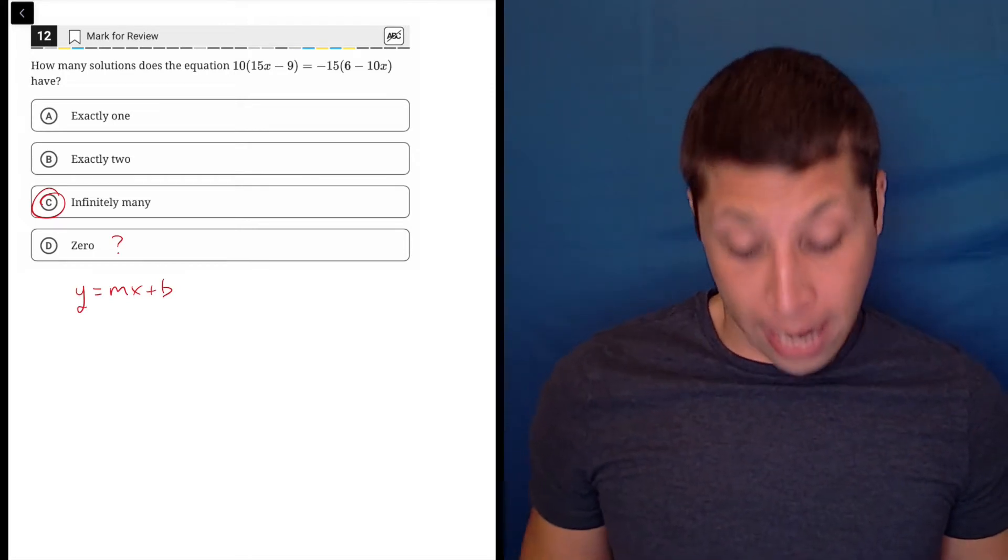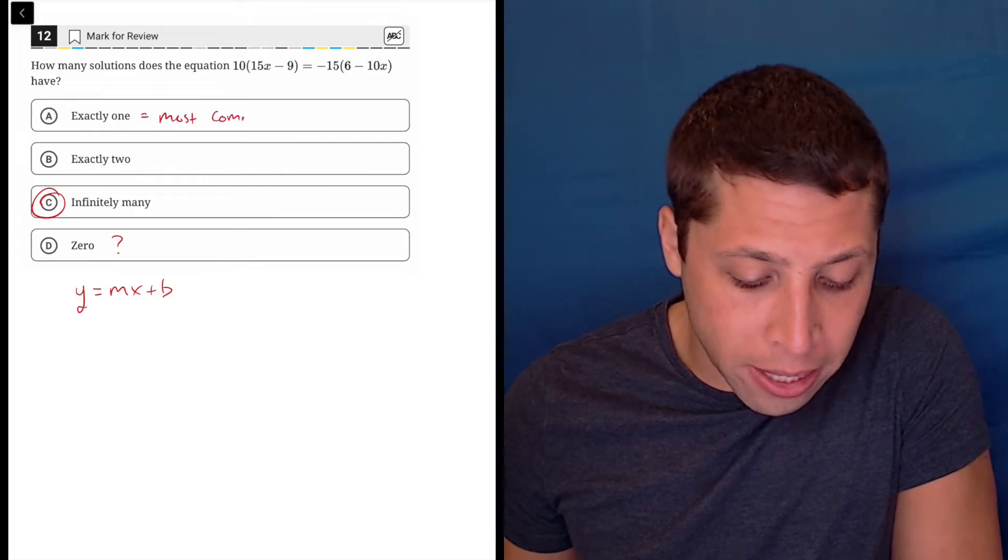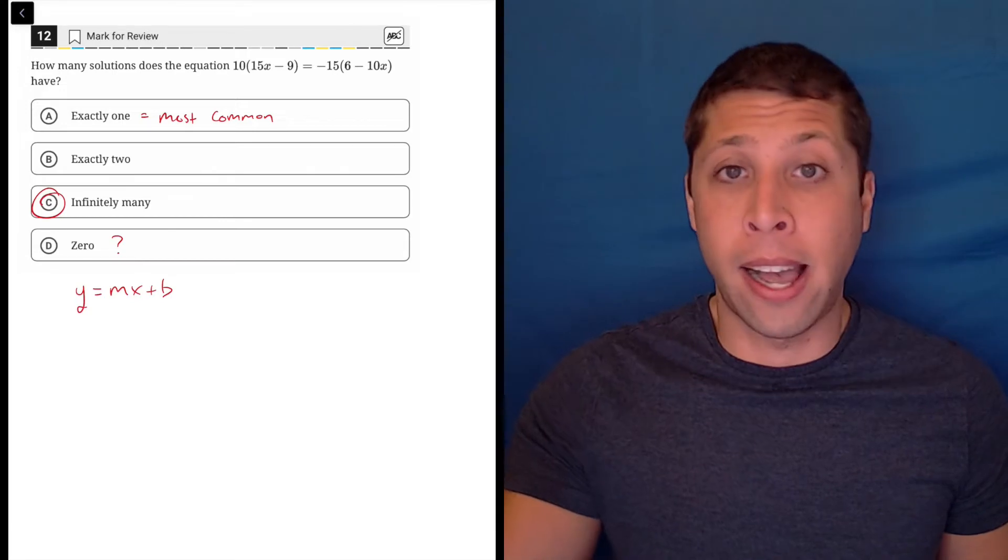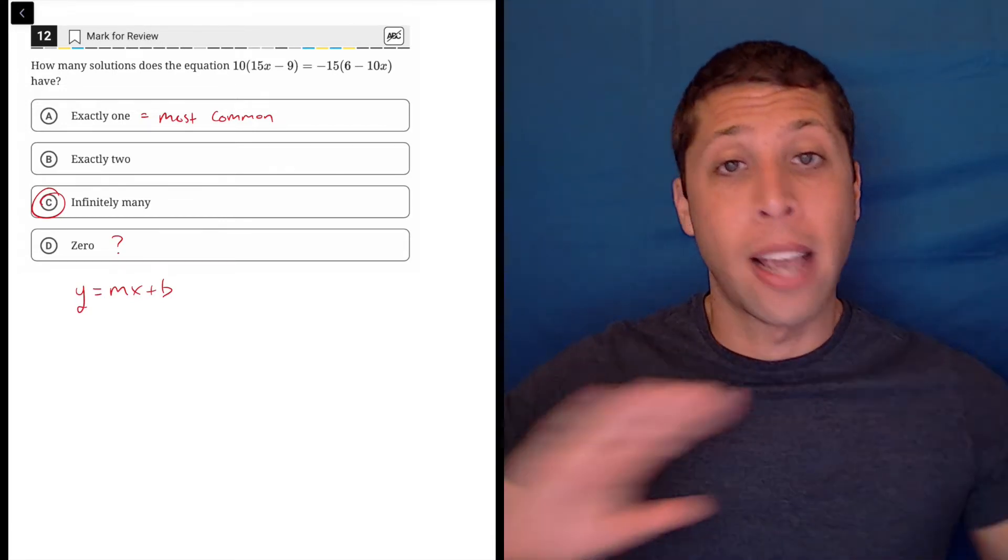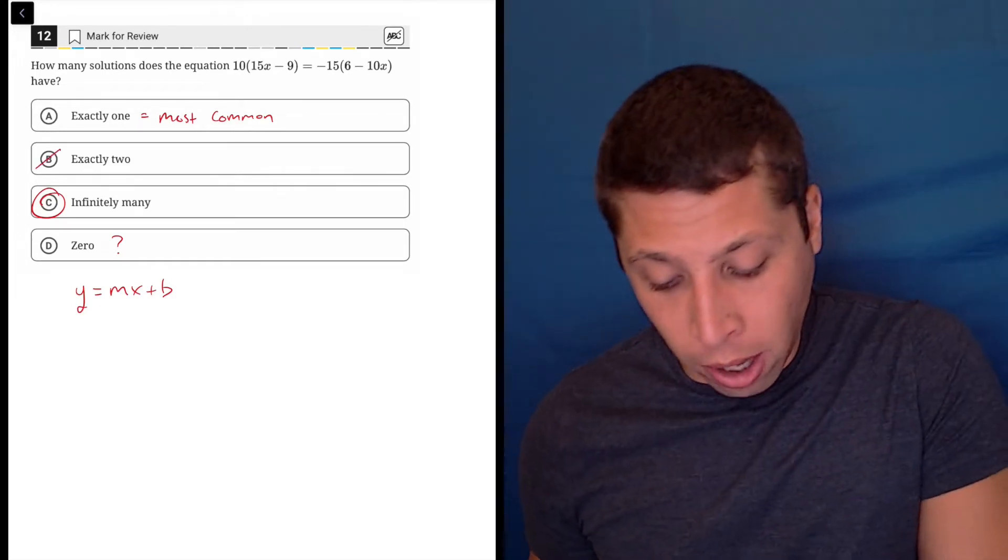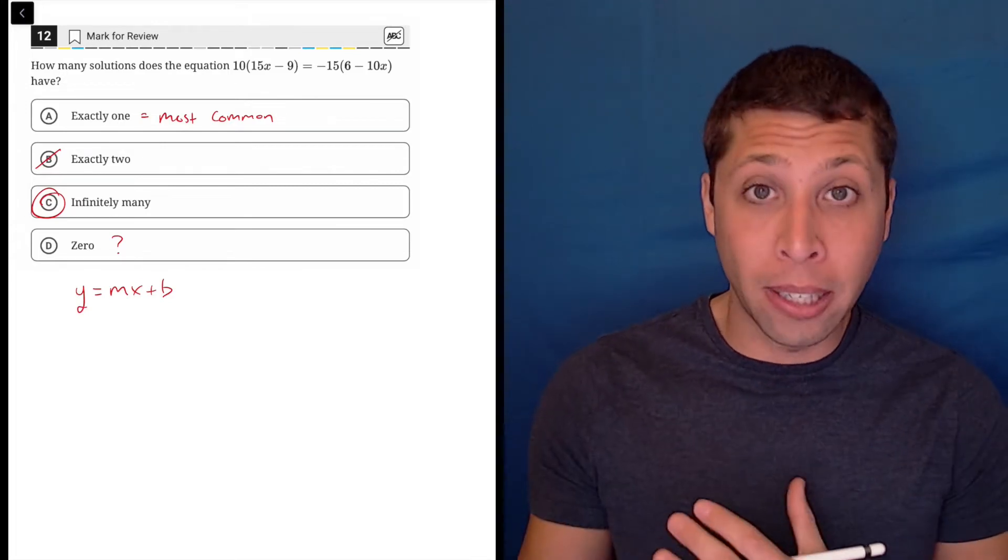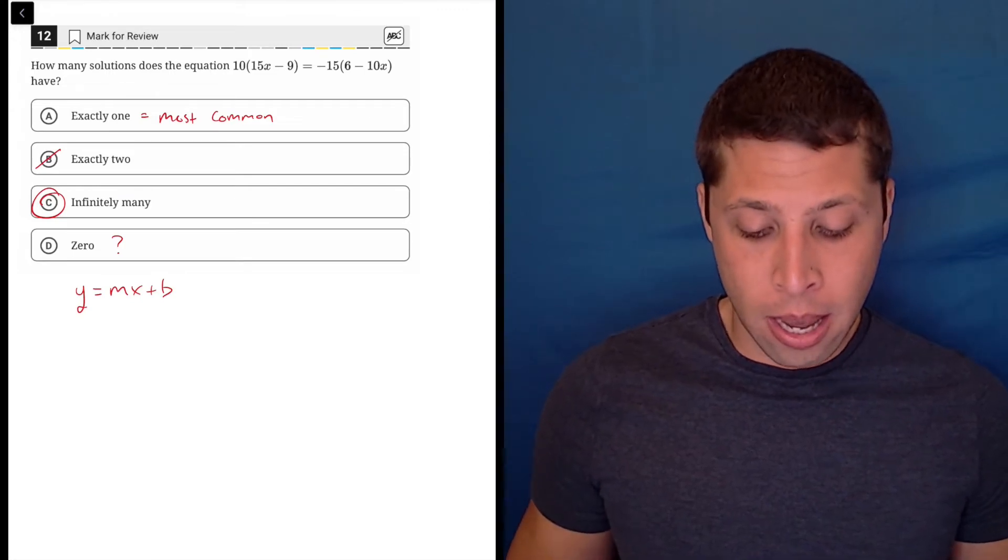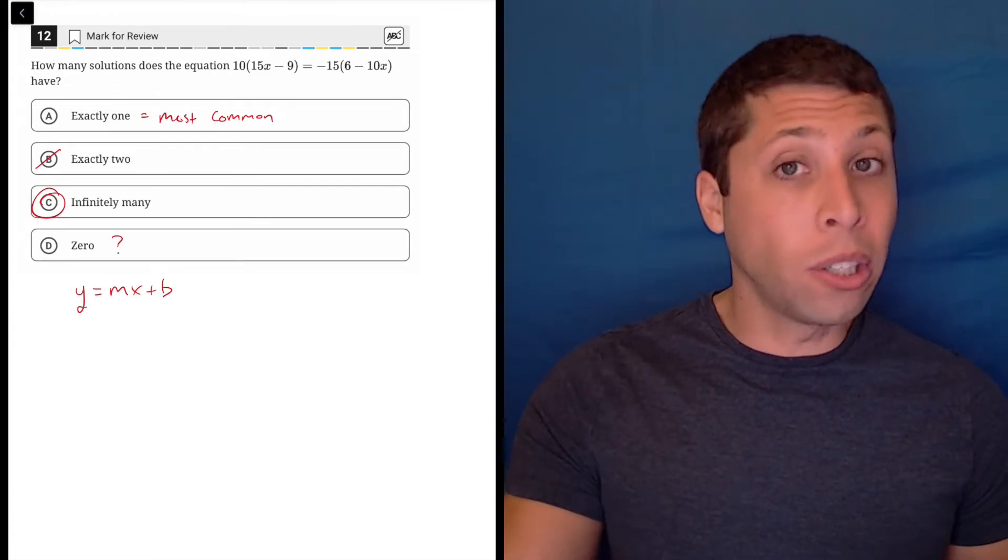So if I have a system of two lines on a graph, the most common thing that's going to happen is that we're going to have exactly one solution. If I randomly generated two linear equations, the odds are extremely high that they're going to have exactly one point of intersection. They're just going to cross once, and that's it. It is impossible for them to cross twice. That can only happen when you have something more complicated like a parabola, a quadratic equation. And we don't have that here because there's no exponent.